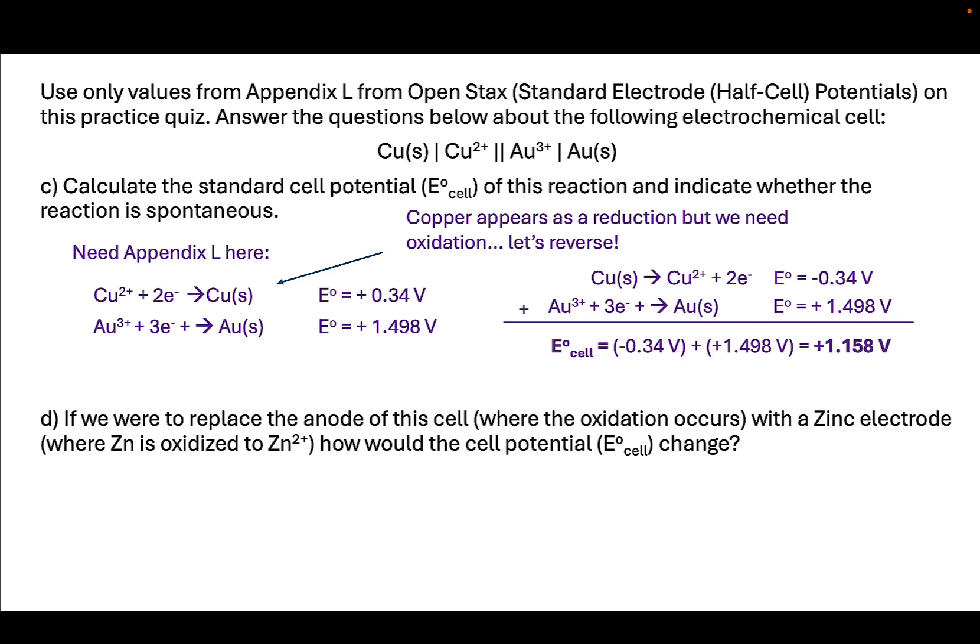Because of that, multiplying a reaction to show that it's losing four electrons, six electrons, whatever—that doesn't change how much energy each electron has, and that's what the voltage represents. It's an energy per Coulomb or per electron.